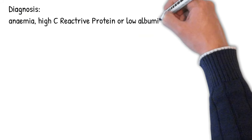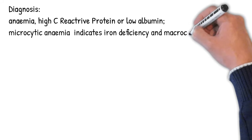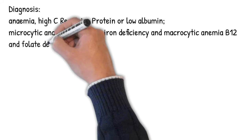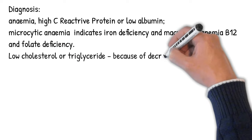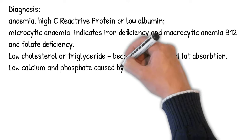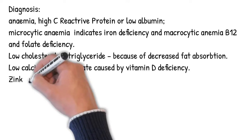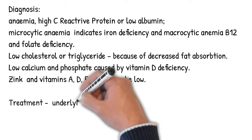Malnutrition diagnosis: anemia, high C-reactive protein or low albumin. Microcytic anemia indicates iron deficiency and macrocytic anemia indicates B12 and folate deficiency. Low cholesterol or triglyceride because of decreased fat absorption. Low calcium and phosphate caused by vitamin D deficiency. Zinc and vitamins A, D, E, and K may be low.